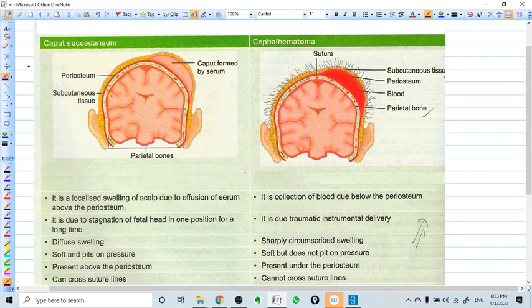Now see, the first swelling can be caput succedaneum and the second can be cephalohematoma. From the name only you can identify what is the problem there. Caput succedaneum, you can see any blurred thing in the name of this swelling. While cephalohematoma, that hematoma means there is blood, there is collection of blood.